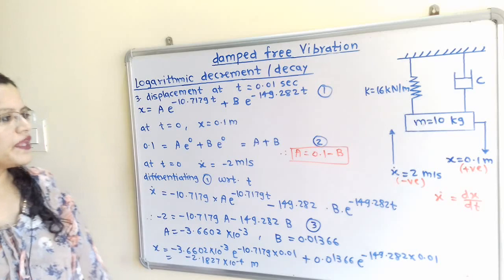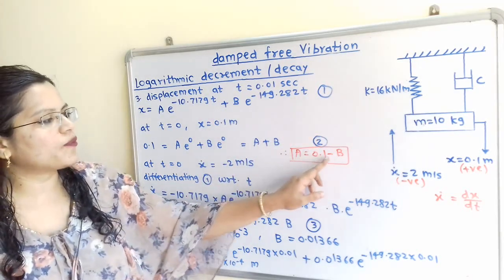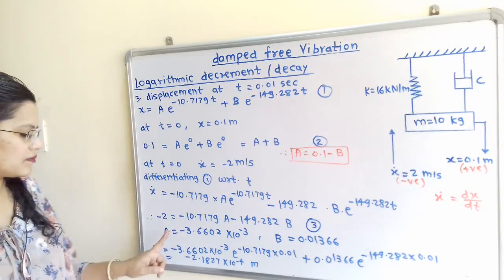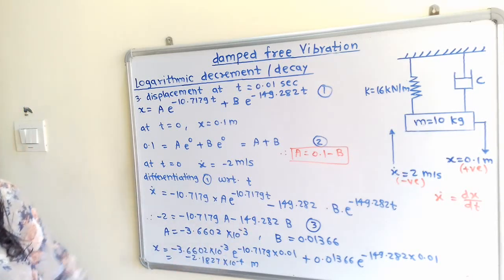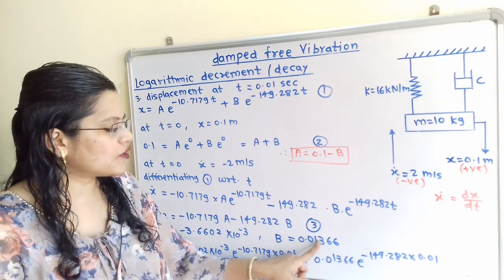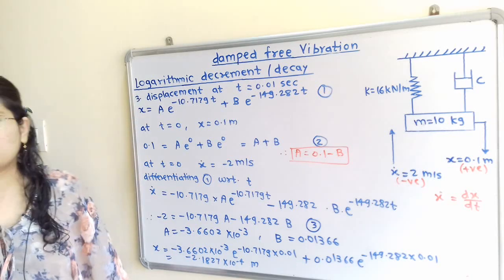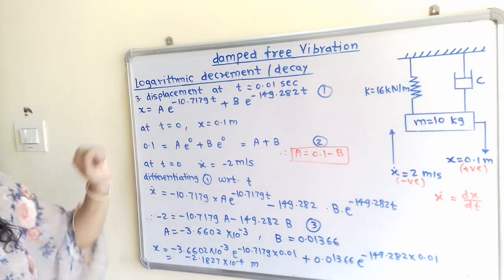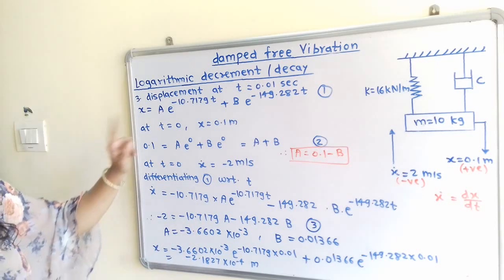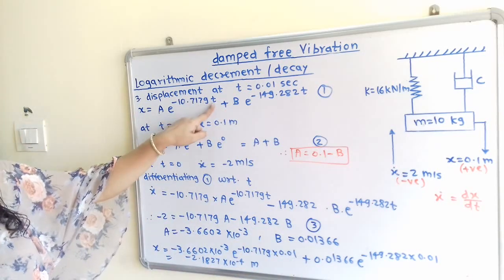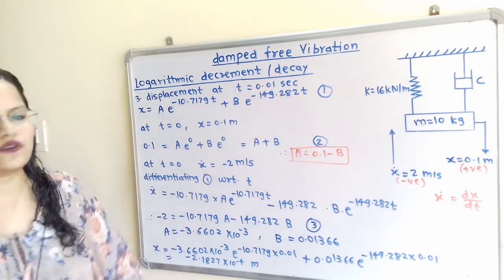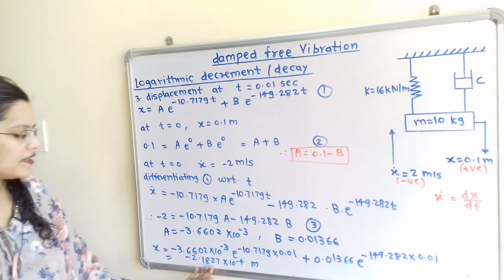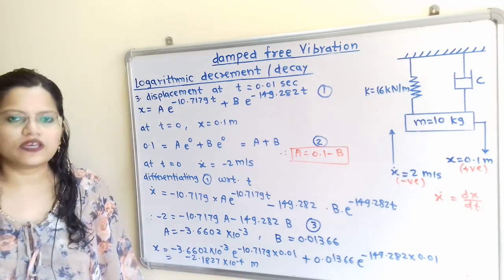From equation number 2, A = 0.1 − B. Substituting into equation 3 and solving, we get: A = −3.6602×10⁻³ and B = 0.01366. Now substituting these values of A, B and t = 0.01 second into equation 1, we calculate the displacement x. The result is x = −2.1827×10⁻⁴ meter.